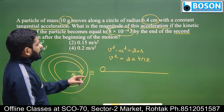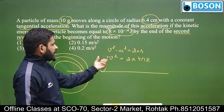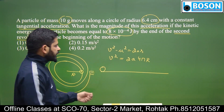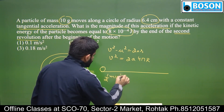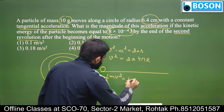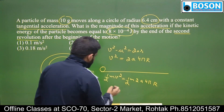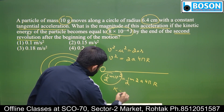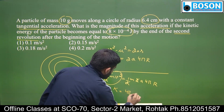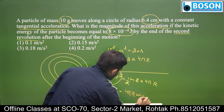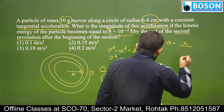अब देखें, यहां पर हमें कहा गया है कि 2 circle complete करने के बाद kinetic energy given है। तो क्या मैं इस left hand side को kinetic energy में convert कर सकता हूं? Multiplying both sides by (1/2)m: this side becomes (1/2)m · 2A · 4πr. This is nothing but kinetic energy.